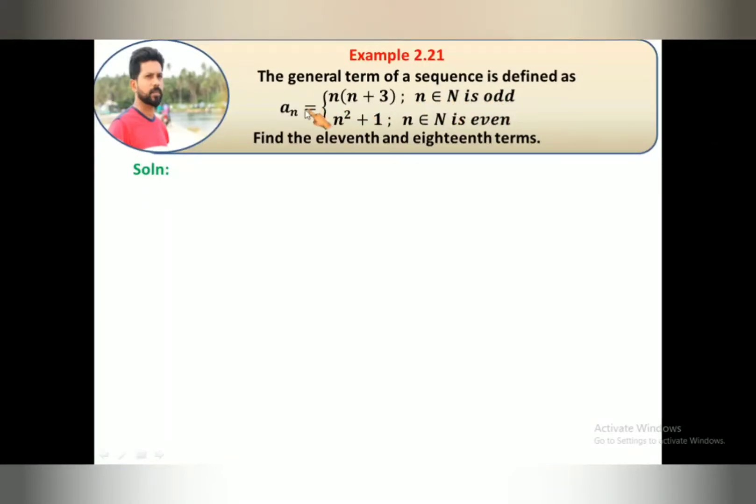When n is an odd number, we use this general term. When n is even, we use a_n = n² + 1. So find the 11th and 18th terms. We have to find the 11th and 18th term.